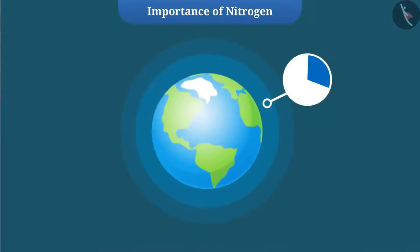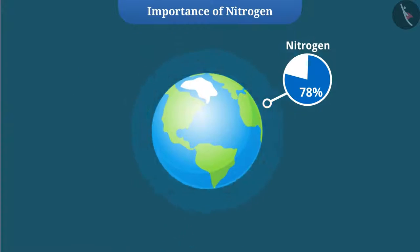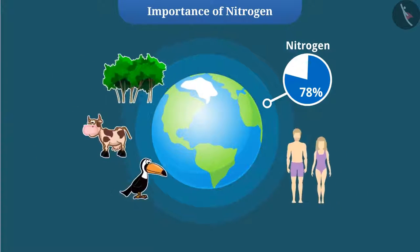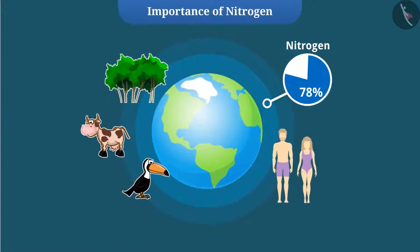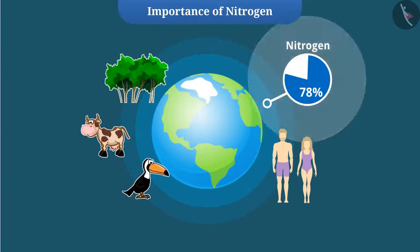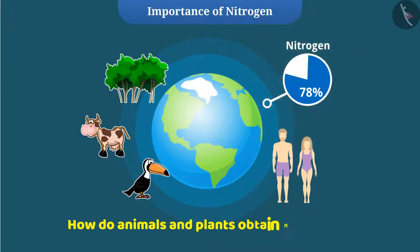About 78% of the earth's atmosphere is nitrogen gas. Though there is plenty of nitrogen in our atmosphere, many living organisms including us cannot use nitrogen directly from the atmosphere. So, how do animals and plants obtain nitrogen?